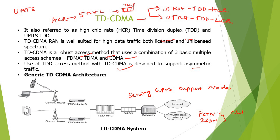Time Division Duplexing Code Division Multiple Access with the radio access network is very well suited for supporting high data traffic, both for licensed spectrum as well as unlicensed spectrum. TD-CDMA consists of basic multiplexing techniques: frequency division multiple access, time division multiple access, and code division multiple access. It supports asymmetric traffic, as TD-CDMA is designed for supporting asymmetric traffic.